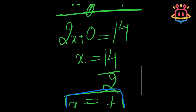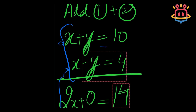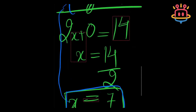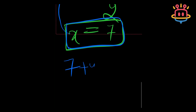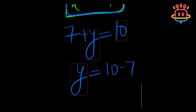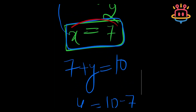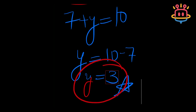Now we are left to identify the value of y. If I substitute this value of x into one of the two equations, I will get the value of y. Let's try putting x into equation one: y is 10 minus 7, which is 3. Tada! We did it! Our final answers are x is 7 and y is 3!